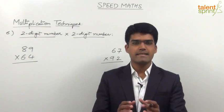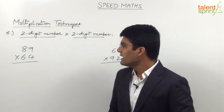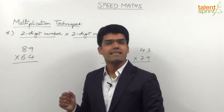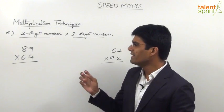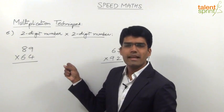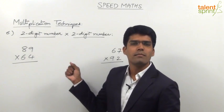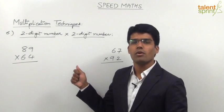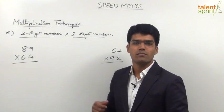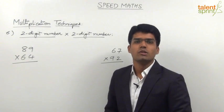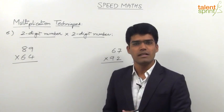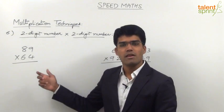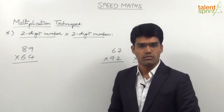Let us take some examples to understand this. Let's say we have to multiply 89 and 64. As you can see, splitting and merging will become a little difficult, so it is better to follow the general way of multiplication. But if we try the general method, it will take a lot of time because the number of steps are more.